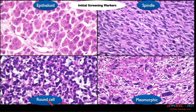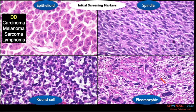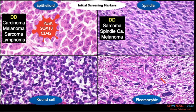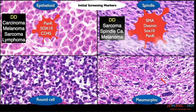When you see any tumor, there are four patterns: epithelioid, spindle cell, round cell, or pleomorphic. When it is epithelioid, the differential diagnosis includes carcinoma, melanoma, sarcoma, and lymphoma. Initial markers should be pancytokeratin for carcinomas, SOX10 for melanoma and some neural-origin sarcomas, and CD45 for lymphoma. When there is a spindle lesion, the differential diagnosis includes sarcoma, spindle cell carcinoma, or melanoma — markers include SMA for smooth muscle.